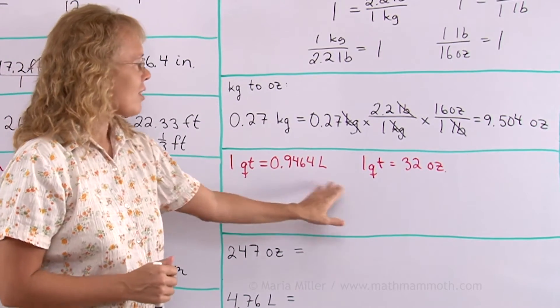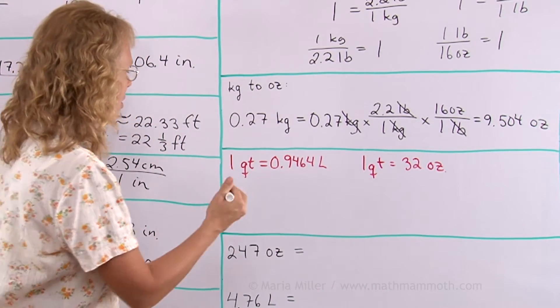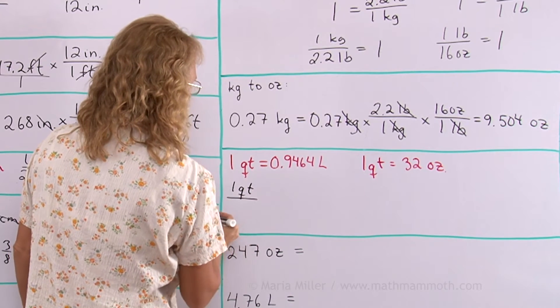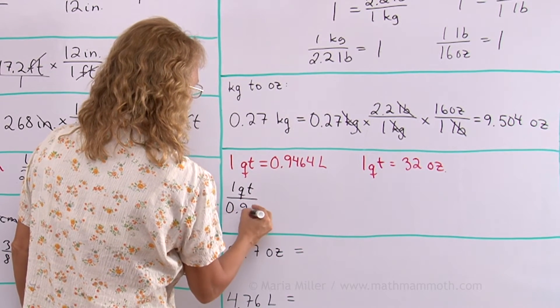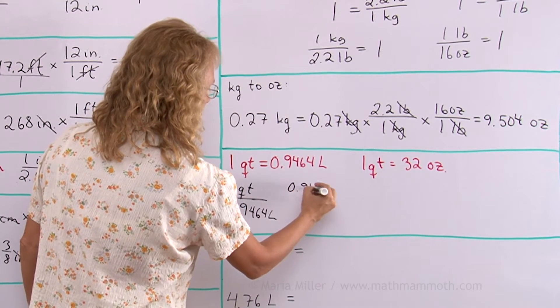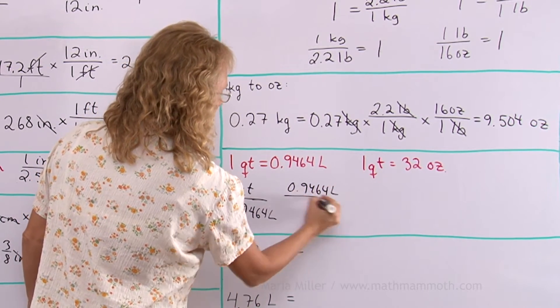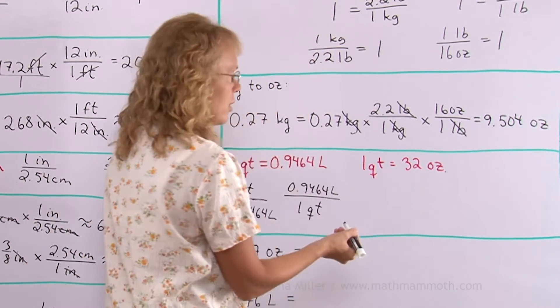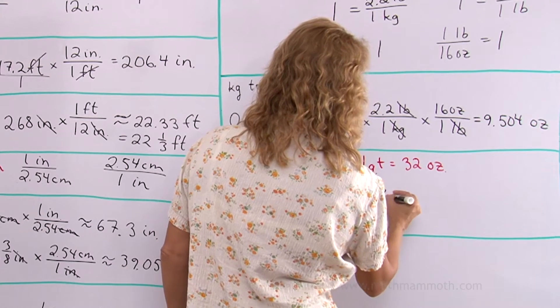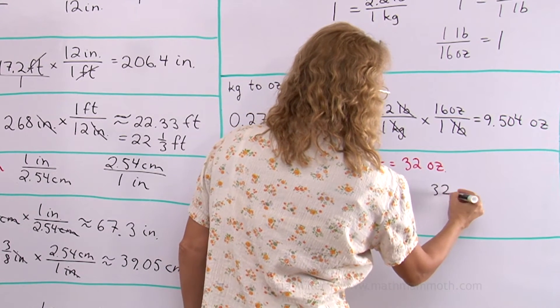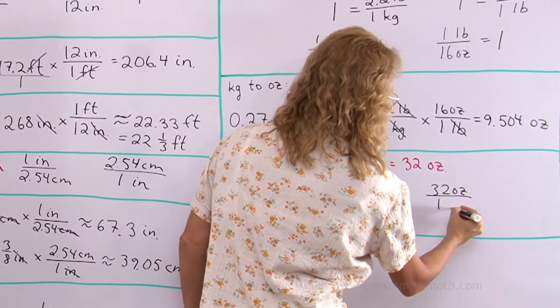Quarts and liters, quarts and ounces. First of all I write my ratios I might use. One ratio I could use is one quart to this 0.9464 liters. And the other one is just the other way around. This on top and one quart on the bottom. And with the quarts and ounces I could use one quart to 32 ounces or 32 ounces to one quart.